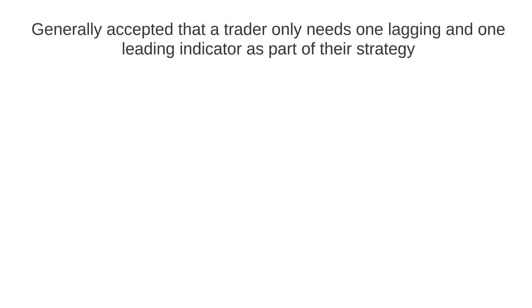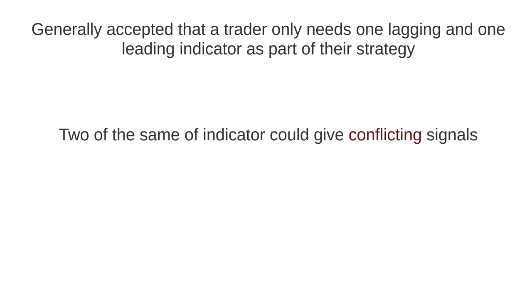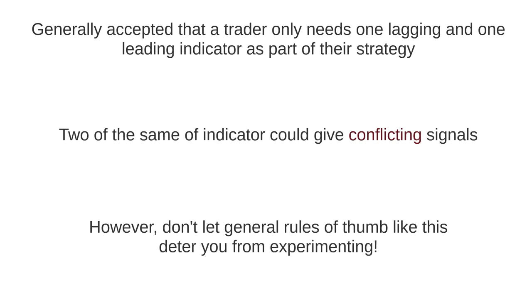It is generally accepted that a trader doesn't really need to use any more than one lagging and one leading indicator as part of their analysis and strategy. The thinking behind this is that because lagging and leading indicators tend to be used for the same purposes, having two or more could potentially give conflicting analysis. For example, if a trader is using two leading indicators for entry signals, one could be telling them to enter a trade and the other may be indicating that they should wait, causing confusion and hesitation rather than clarity. However, as with a lot of things in trading, this is just a general rule of thumb — there are exceptions, and if you find two indicators of the same type that work well together, don't let this put you off.